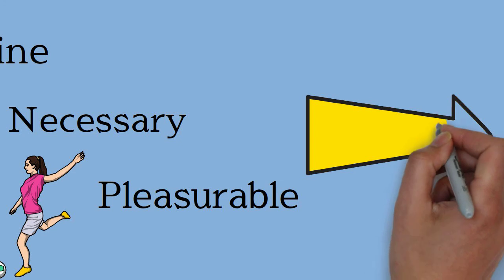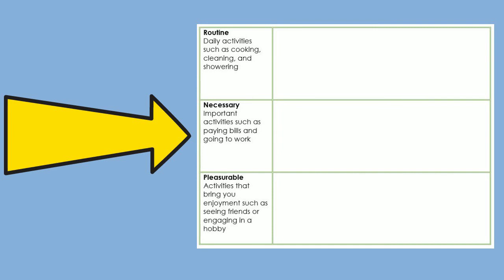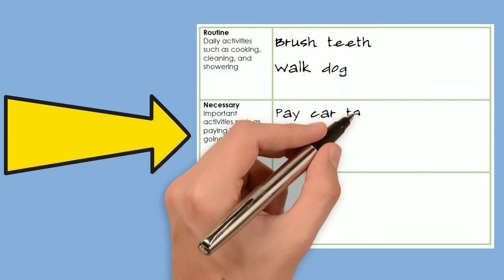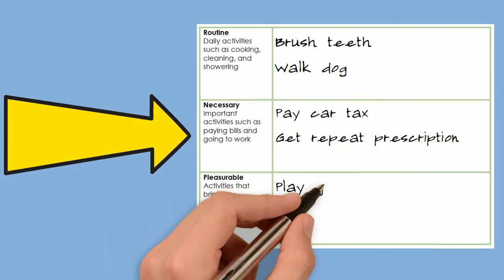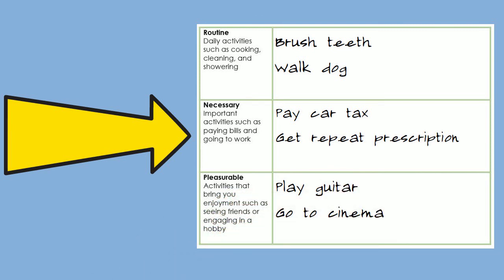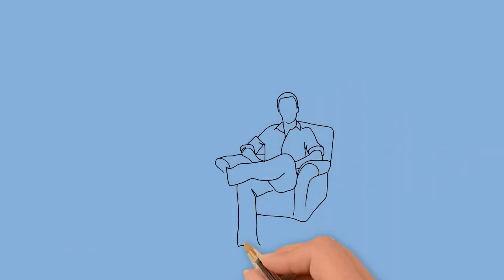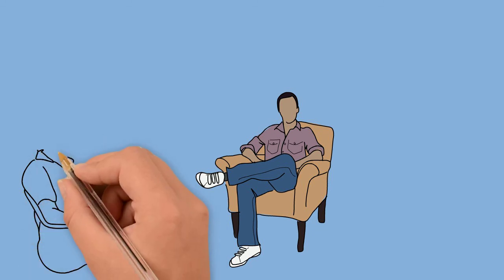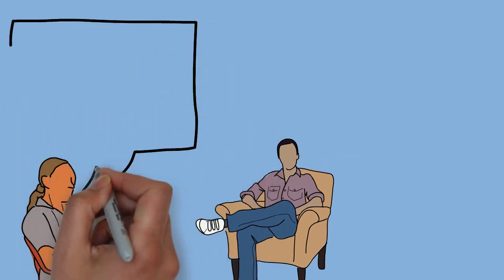Once you're happy that the patient understands the three types, discuss how they'll record these using an RNP worksheet, which gives the patient space to record activities for each type. You'd discuss a few examples in session and then the patient would complete the worksheet as homework, recording activities they either used to do but are now doing less of due to depression — such as eating regularly, seeing friends, or paying bills — or new activities they want to do but lack motivation for, such as picking up a new hobby.